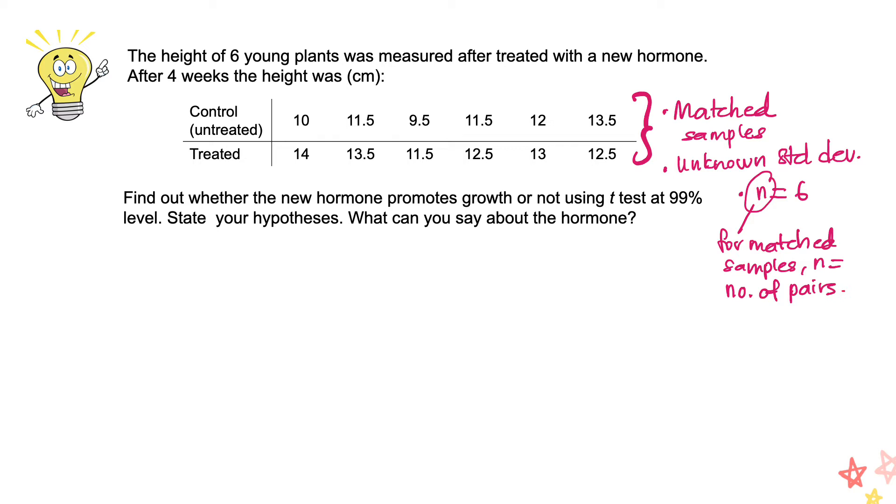There is no information about the standard deviation, so we know that the standard deviation of the population is unknown. And since these two samples are matched, the n is defined as the number of pairs.